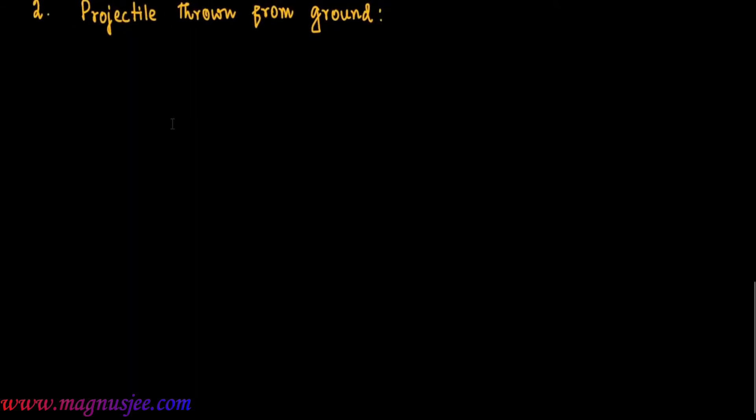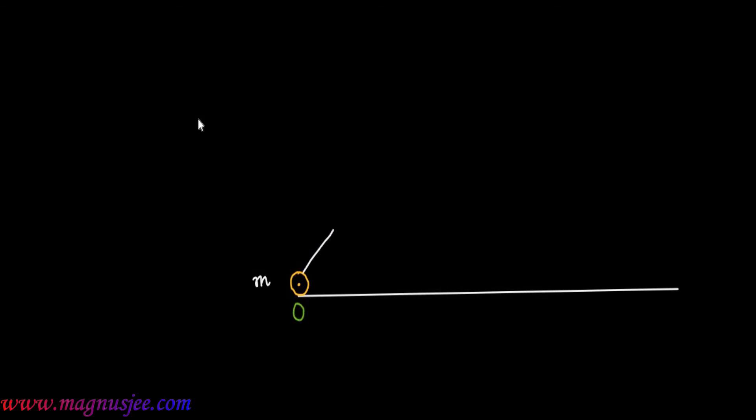We will derive the relation between maximum height H max and horizontal range R of a projectile. We can draw the diagram of a projectile thrown from the ground. This is the projectile of mass M, thrown from point O with initial velocity U, and it describes a parabolic trajectory or path.